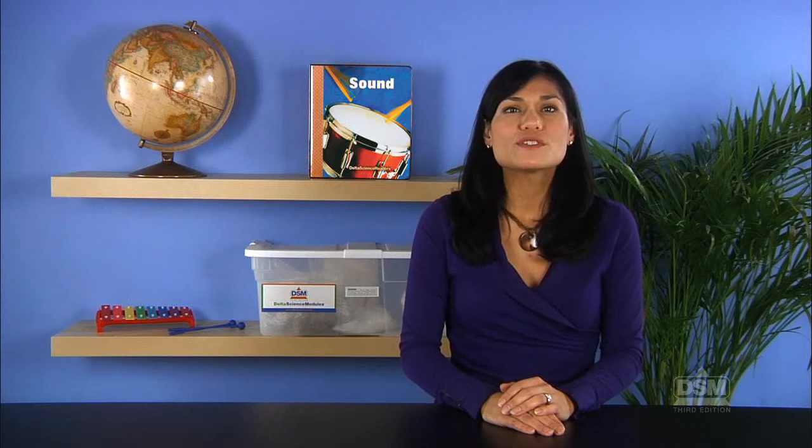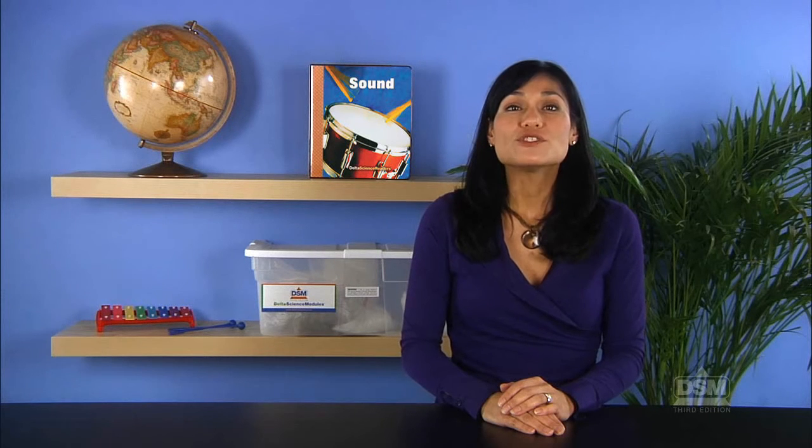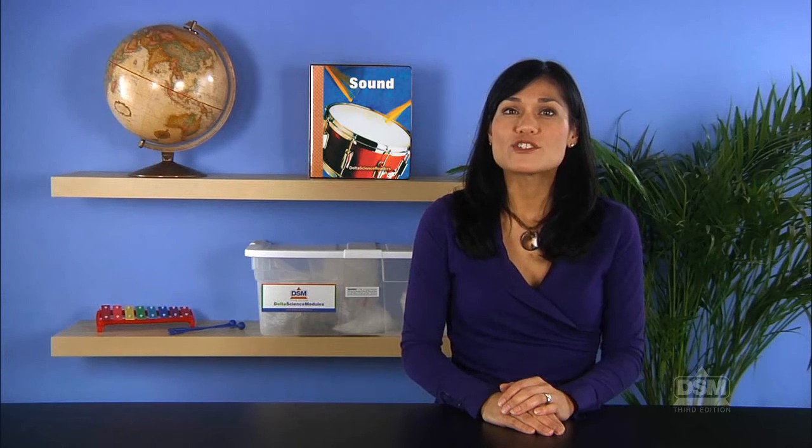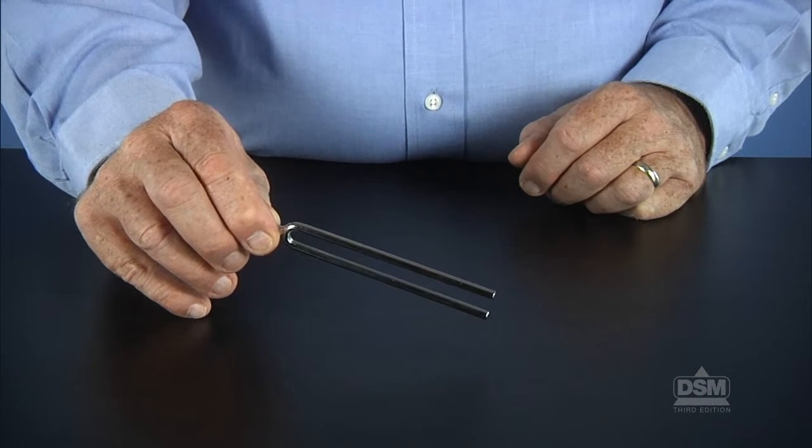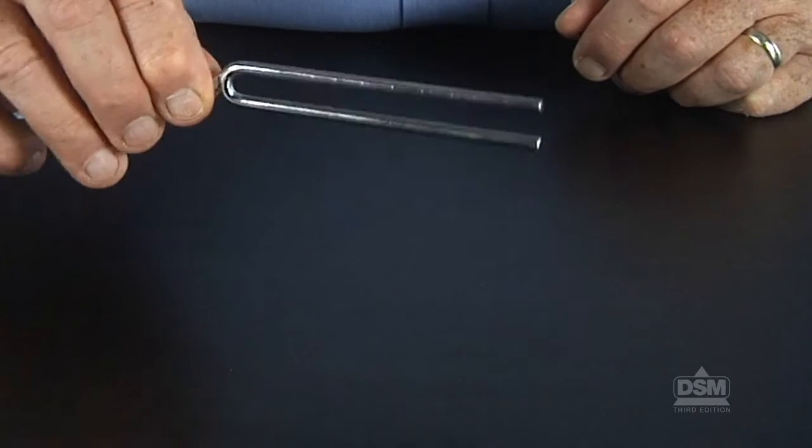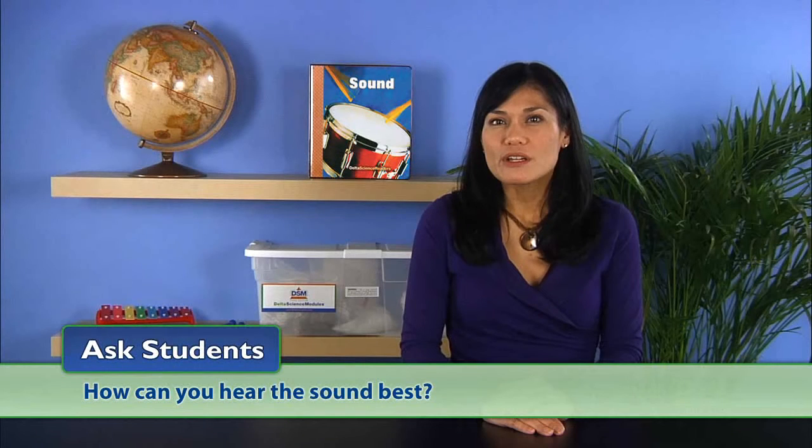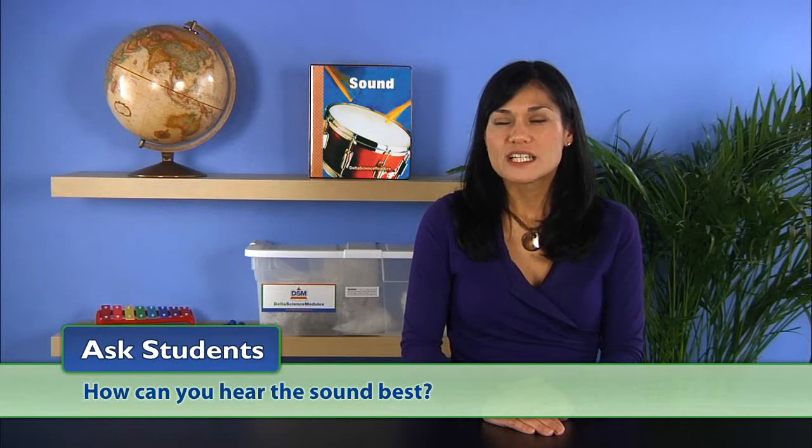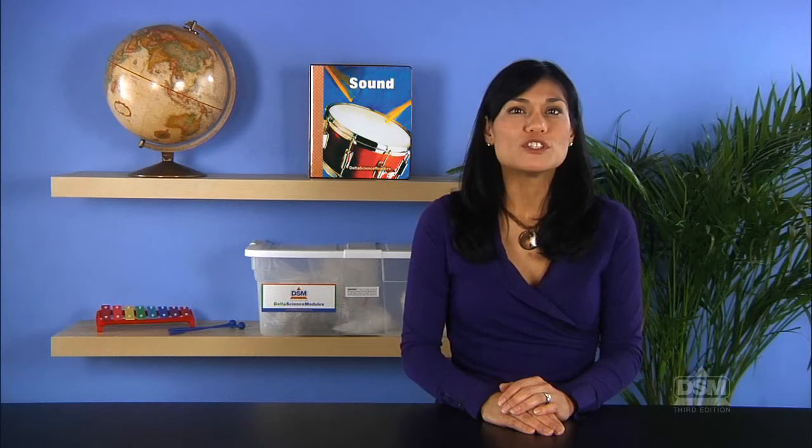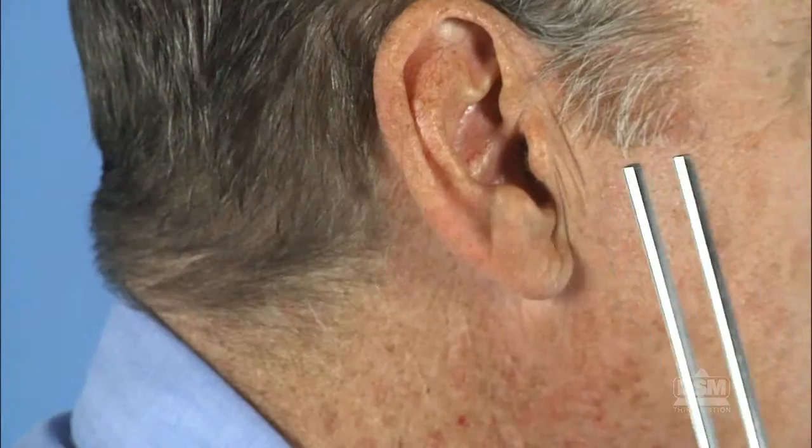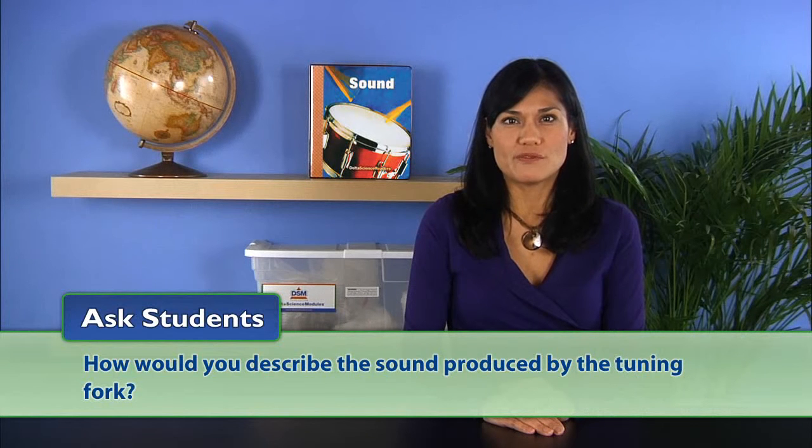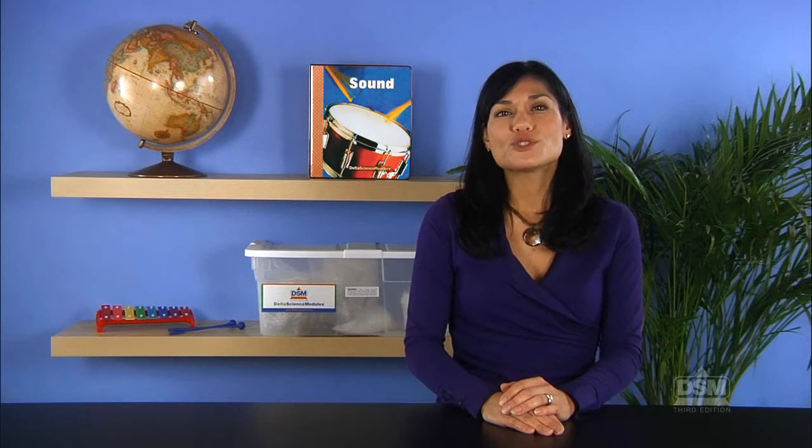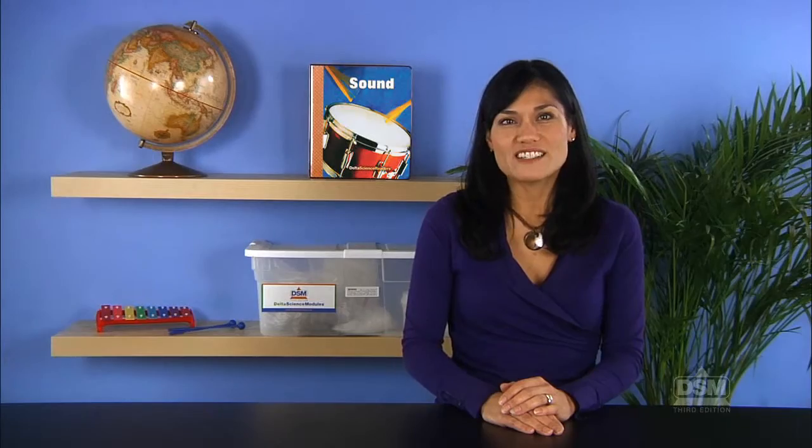Challenge students to produce a sound. They should discover that a sound is produced by striking one prong of the tuning fork against another object, such as a desk. Ask students how they can hear the sound best. Sound can best be heard when the tuning fork is held close to the ear. Then ask how they would describe the sound. Students should suggest a high-pitched ringing sound.